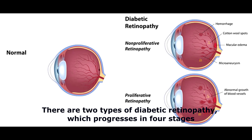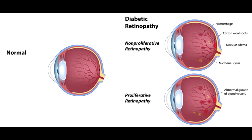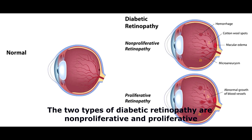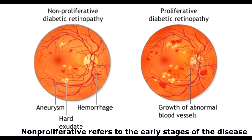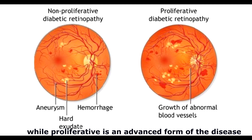There are two types of diabetic retinopathy, which progresses in four stages. The two types are non-proliferative, which refers to the early stages of the disease, and proliferative, which is an advanced form of the disease.